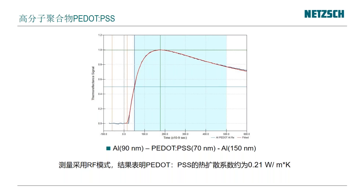第二个例子是一个高分子聚合物，叫PEDOT:PSF，是一种高分子聚合物水溶液，本身导电率非常高。根据不同的配方可以得到不同电导率的水溶液。这个聚合物做成的薄膜非常非常薄，因为我们用的是RF模式，上下都镀了铝。本身这个有机聚合物的厚度只有70纳米，但因为它本身的热导率以及热扩散系数非常低，所以这么薄的材料我们也可以测试。测试采用RF模式，结果表明这种材料的热导率大概是0.21 W/(m·K)。